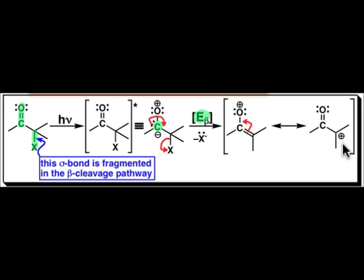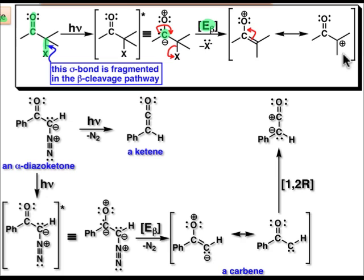This highly reactive carbocation is capable of undergoing subsequent chemistry. In the example shown below the photo-Wolff rearrangement, this atom will become a carbene species.